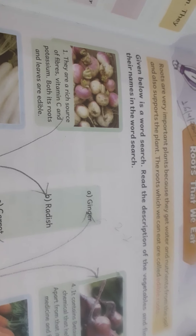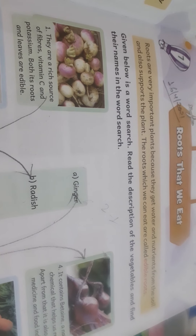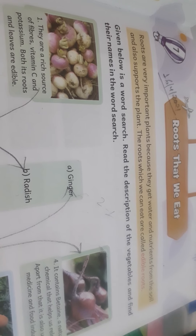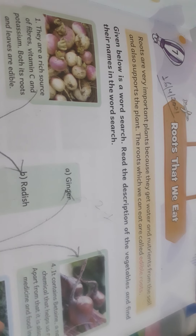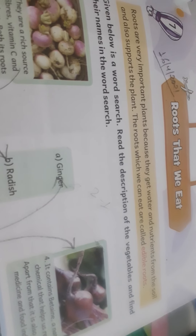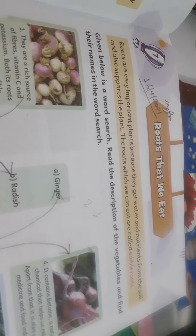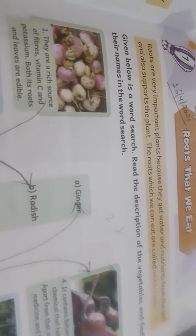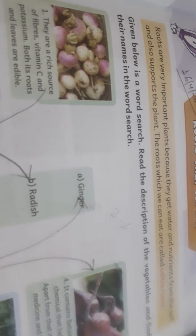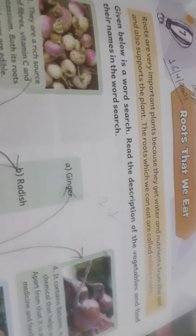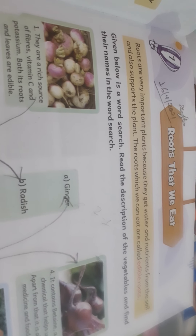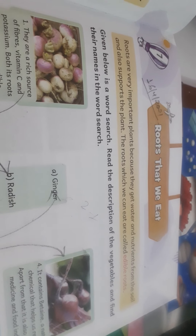Roots are very important plants because they get water and nutrients from the soil. This is an important part because it gives our plants water and nutrients, and also supplies the soil which goes through the roots and also supports the plant.